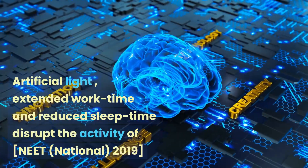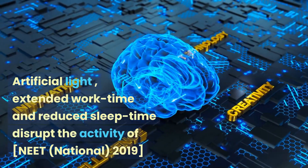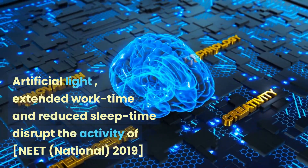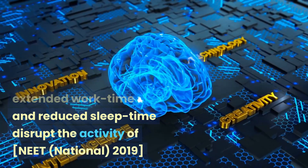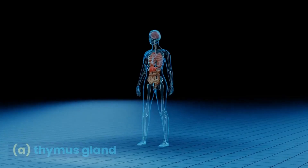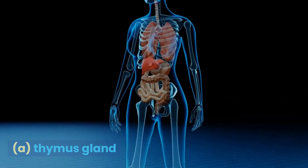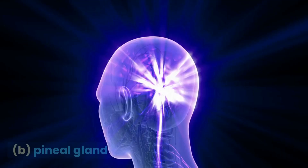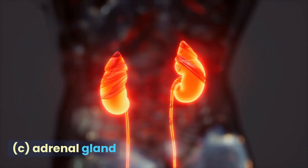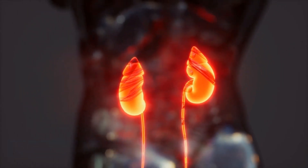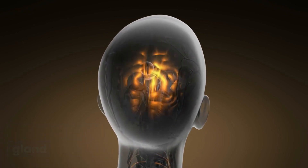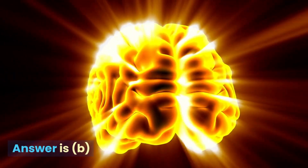Artificial light, extended work time and reduced sleep time disrupt the activity of which gland? Options: A. Thymus gland, B. Pineal gland, C. Adrenal gland, D. Posterior pituitary gland. The answer is B.